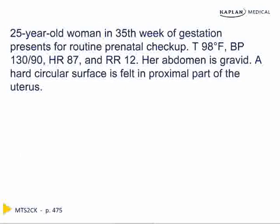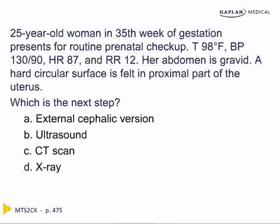For malpresentation on the Step 2 exam: a 25-year-old at 35 weeks gestation has a hard circular surface felt in the upper part of the abdomen. The next best step is ultrasound, which should always be performed when concerned about malpresentation to confirm the location of the fetus before offering therapeutic measures such as external cephalic version. CT and x-ray are avoided during pregnancy due to radiation exposure.